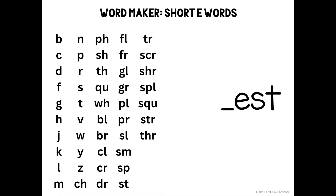One syllable words can have an onset — that's the letter or letters that come before the vowel in a word — and a rhyme. That's the vowel and any letters that come after it. All of the words in a word family have the same rhyme, but they can have different onsets. We are going to match onsets and rhymes to see if we can make words.